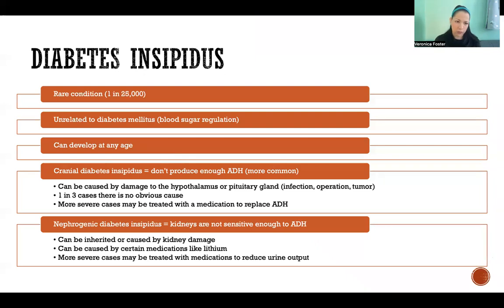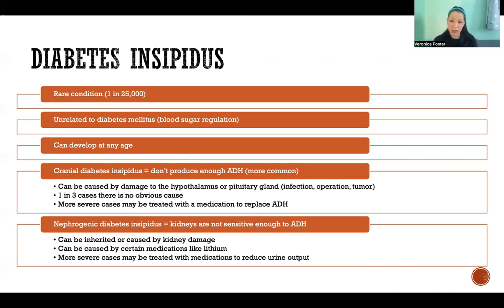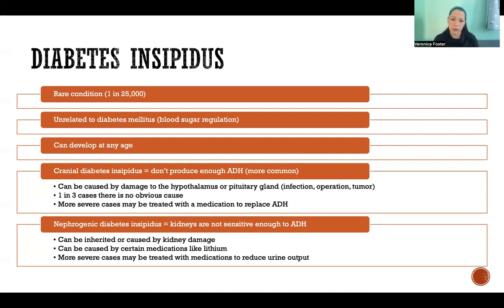Diabetes insipidus is a rare endocrine disorder affecting only about 1 in 25,000 people. It is completely unrelated to diabetes mellitus, which is the blood sugar regulation disorder we commonly know. It can develop at any age — someone isn't necessarily born with it. There are two types: cranial diabetes insipidus, where you're not producing enough ADH (ranging from mildly insufficient to none at all), and nephrogenic diabetes insipidus, where you produce plenty of ADH but the kidneys don't respond to it.